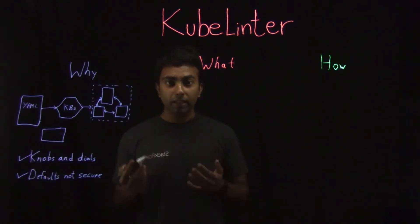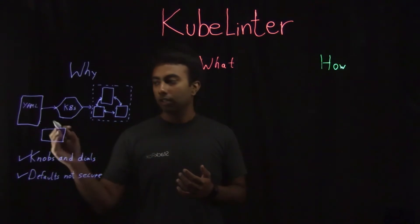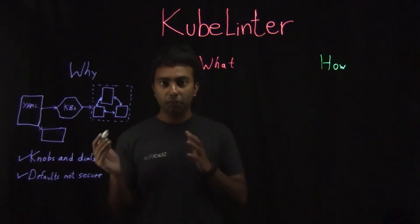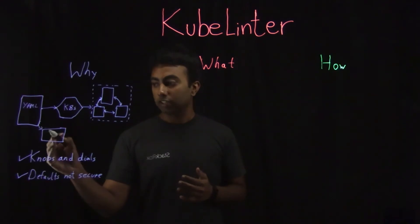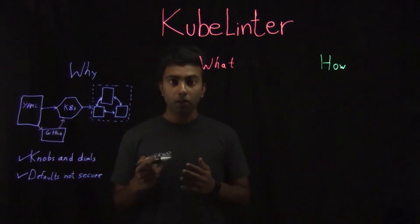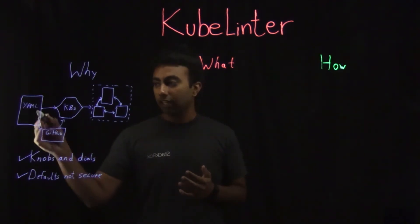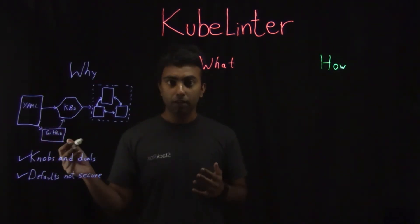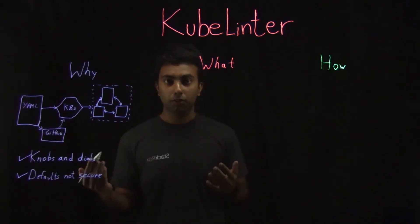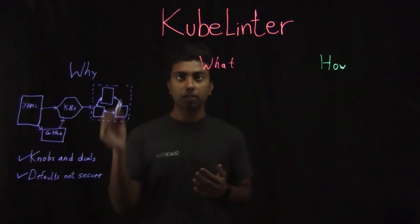The idea behind KubeLinter is, since we deploy these applications in a two-step process, where we check in the YAML files into a version control system like GitHub before sending it into our Kubernetes clusters, what if we build tooling that could analyze the YAML files in GitHub and run checks against them to make sure that they were following the best practices that we wanted to follow. And that is why we built KubeLinter.